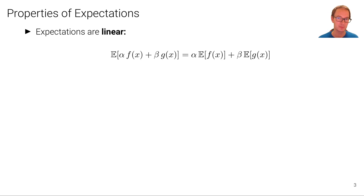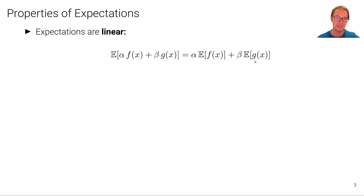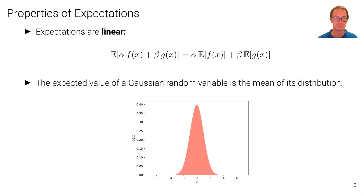One important property of expectations is that they are linear operators. That means if we take the expectation of alpha times one function of x plus beta times another function, then this equals alpha times the expectation of f plus beta times the expectation of g — we can push the expectation operator inside. In the case of a Gaussian random variable, the expected value is the mean of the distribution. Because this distribution is symmetric, we obtain the expected value as the mean mu, which in this illustration would be zero.